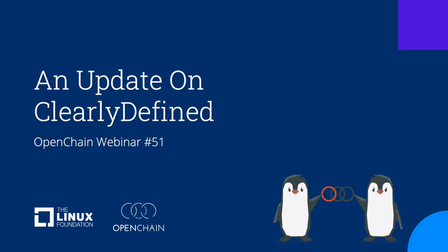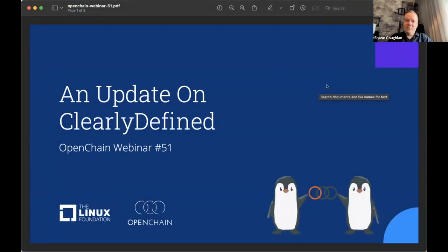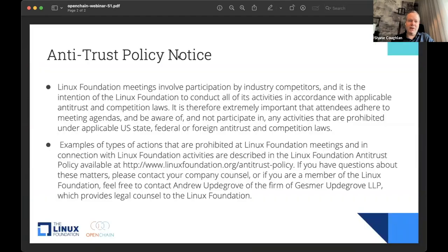For those of you who are just dialing in, this is the 51st OpenChain webinar, and this time we're going to be covering the Clearly Defined project, which helps us understand what software is out there, what it is, and what that means for us. This webinar and all OpenChain meetings are under the Linux Foundation antitrust policy. You'll find the full policy on our website, and if you're from a Linux Foundation member company, you can direct questions to our counsel, Andy Updegrove.